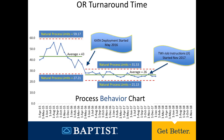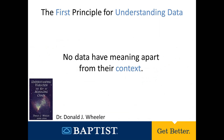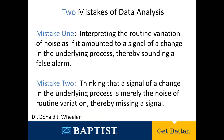The next step was in November of 2017, when the team started using TWI job instructions to help create a standard behavior on various tasks. This countermeasure, in addition to other countermeasures, had a huge impact on the pattern of work, and the process behavior chart once again provided a signal with eight or more successive values below the solid green line. A new pattern of work was once again created, and a new norm had been established. The process is now once again aligned to the new goal or voice of the customer. Each signal on a process behavior chart represents an opportunity to gain more insight into your process. There are two principles to understand data, and also two mistakes we make when analyzing data — you can hit pause to look at these.